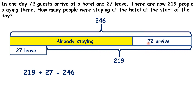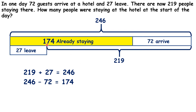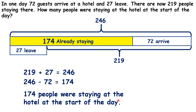72 of them arrived today, but we want to know how many were already staying there. So what do we need to do? We need to subtract 72 from 246. You will need to use column subtraction, but you should get 174. So 174 people were staying at the hotel at the start of the day.